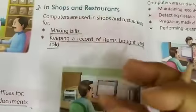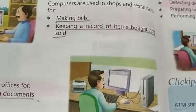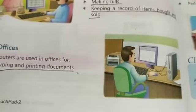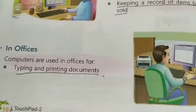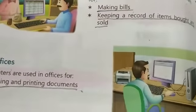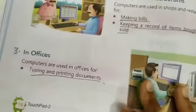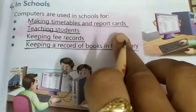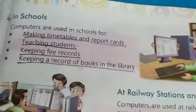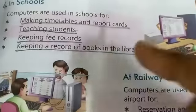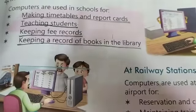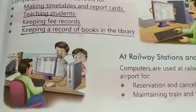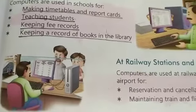Phir aapne dekha tha shops aur restaurants mein kya hota hai — bills bharane ke liye hota hai. Saath hi saath record bhi rakha jata hai ki kitne items kharide gaye aur kitne bheje gaye. Offices mein typing ki jati hai computer pe, uska printout nikala jata hai, documents ke printouts pages pe nikalte hain. Schools mein time tables banaye jate hain, report cards bante hain, students ko padhane mein bhi help hota hai. Fee record bhi computer pe hi maintain hota hai. Library ki books ka bhi record kiya jata hai — ki kis date mein konsi book kis bachche ne li hai aur uski returning date kya hai.